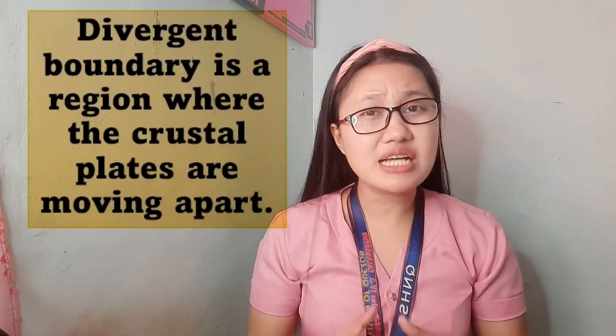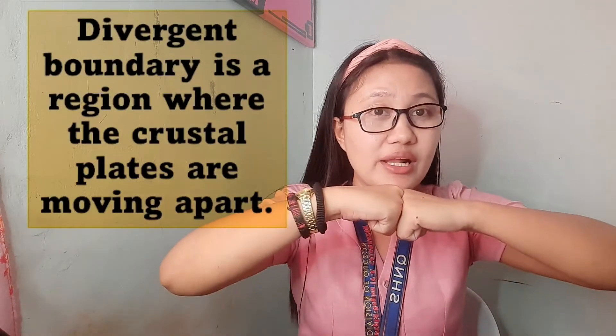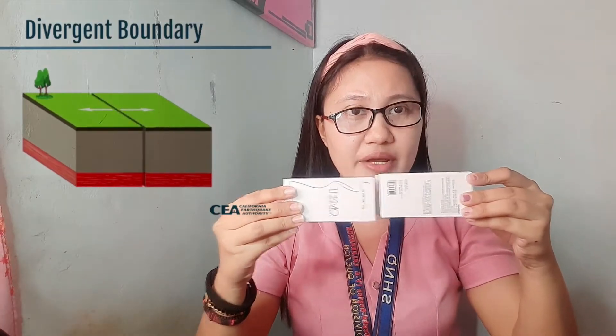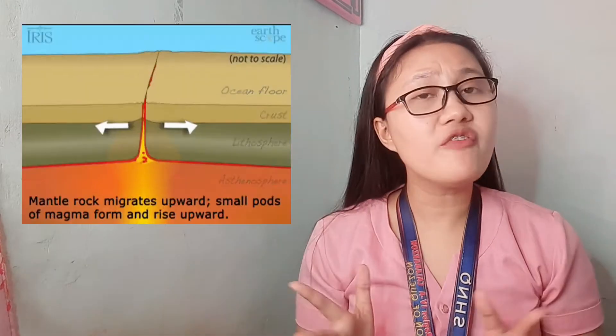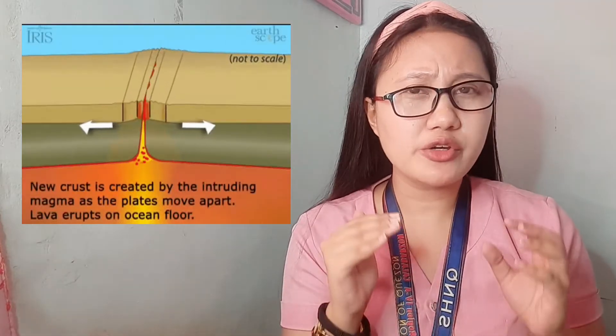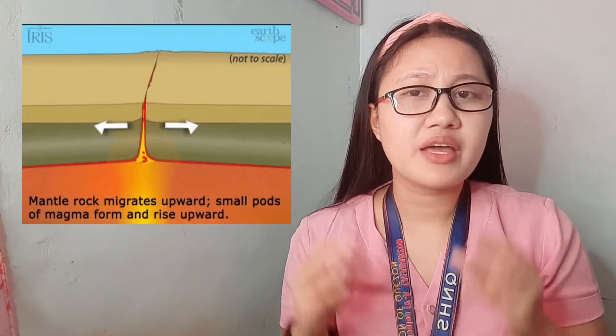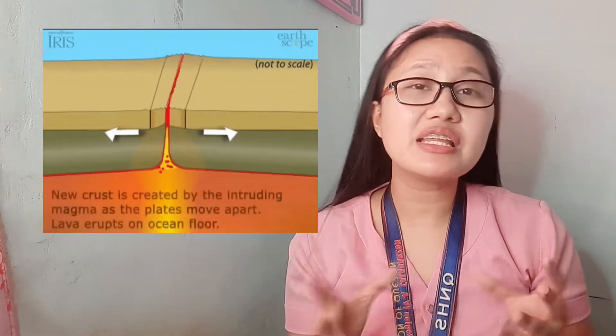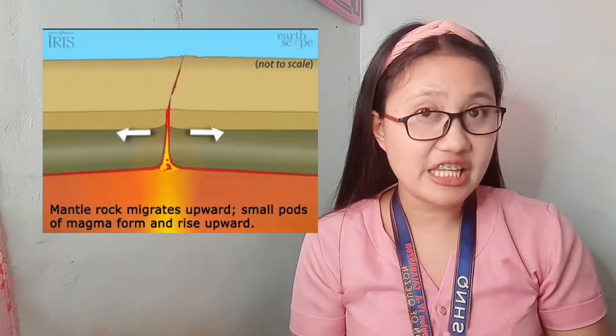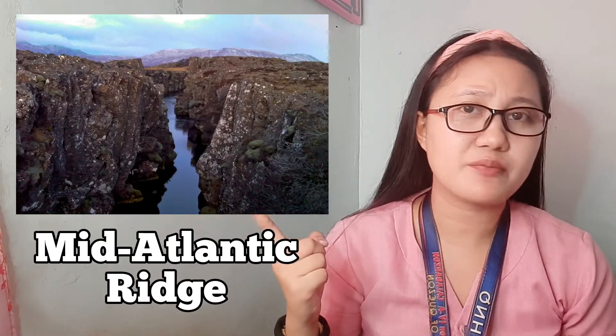At a convergent plate boundary the plates collide, but at a divergent plate boundary it is a region where the crustal plates are moving apart. A divergent boundary occurs when two tectonic plates move away from each other. Along these boundaries, earthquakes are common, and magma — molten rock — rises from the Earth's mantle to the surface, solidifying to create new oceanic crust. An example of a divergent tectonic plate boundary is the Mid-Atlantic Ridge.